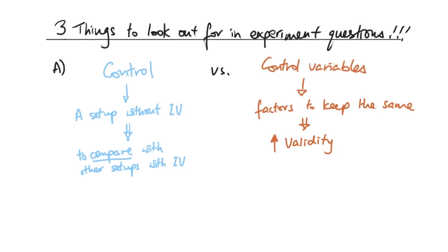For example, if we are doing an experiment to look at the effects of different concentrations of auxins on the growth of a plant, then the control setup would be a plant that does not have any auxins — it would have water applied to it, whereas the other plants would have different concentrations of auxin solutions applied. So the control setup shows that water itself will not actually cause the observed effects.